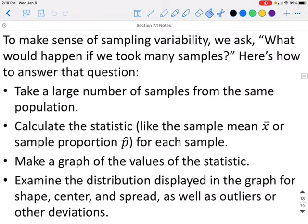To make sense of sampling variability, we ask what would happen if we take many samples. Here's how to answer the question: Take a large number of samples from the same population. Calculate the statistic, such as the mean or the proportion, for each sample. Make a graph of the values of the statistic and examine the distribution displayed in the graph for the shape, center, and spread, as well as any outliers or other deviations.